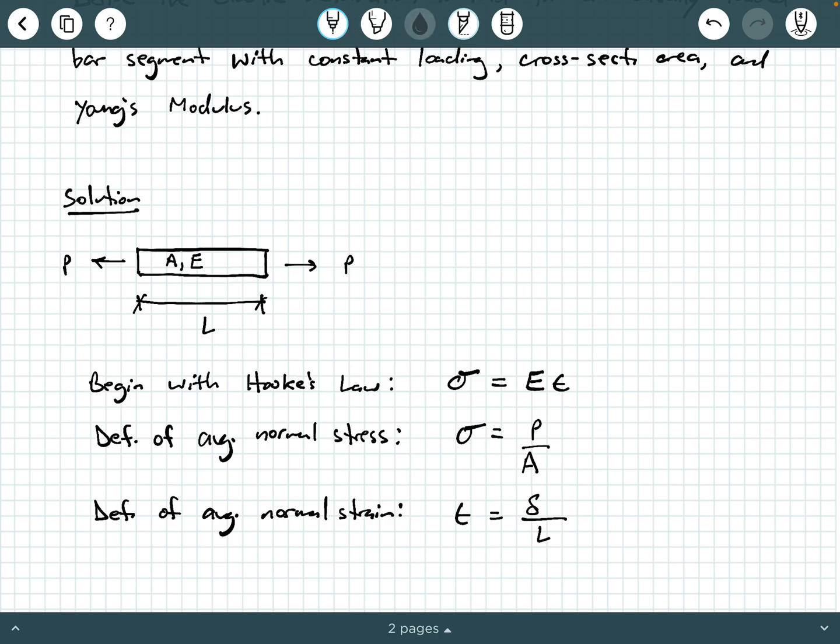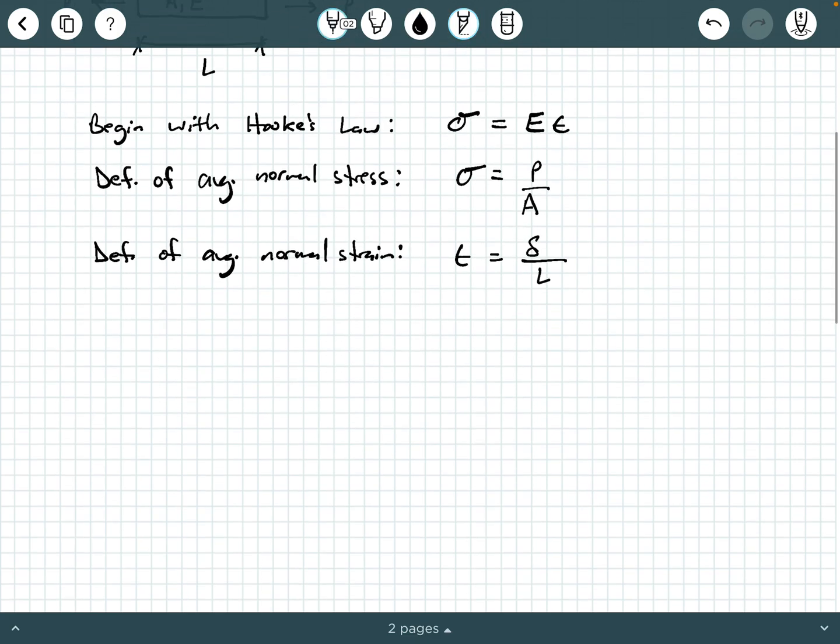Now look what we can do. We can substitute the term P over A into the left side of Hooke's Law's equation, and substitute the definition of strain delta over L into the right side. So by substitution, we can say P over A equals E times delta over L. And then rearranging, we can get delta equals PL over AE, and thus it has been shown.